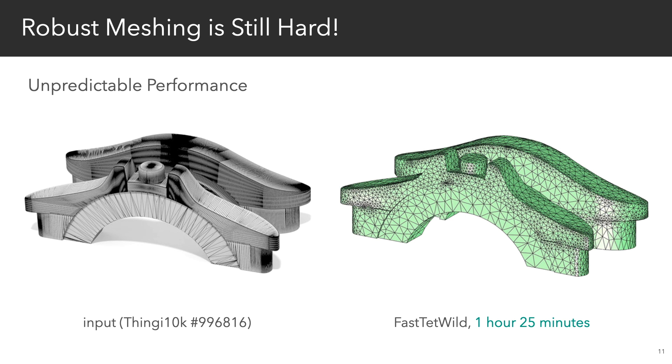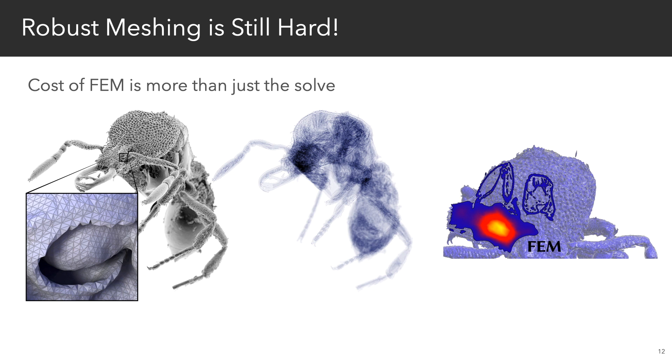The performance can also be unpredictable. So even on models that are geometrically simple, if the input triangulation is bad, then the performance can really suffer. And in general, meshing really is the bottleneck in finite element methods.